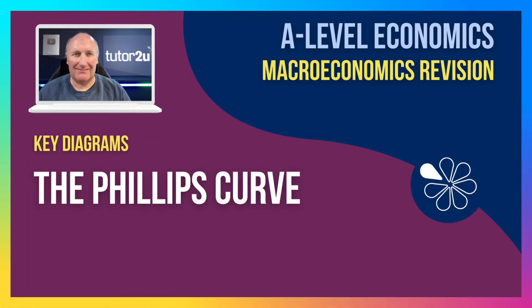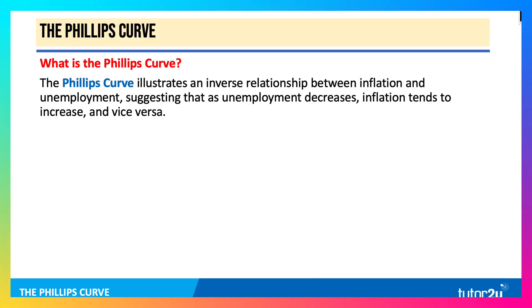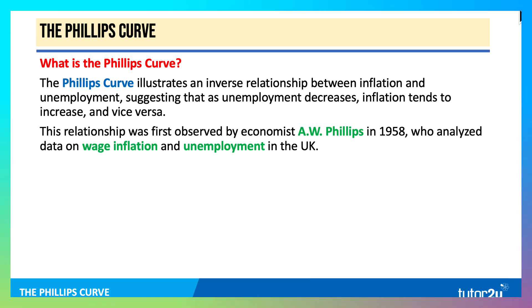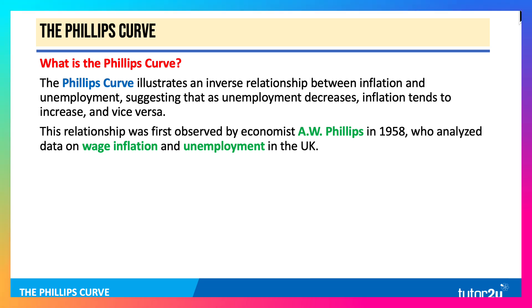Hi there. Let's spend a few minutes revising the essence of the Phillips Curve, a key diagram you can draw in your macroeconomics paper. The Phillips Curve basically tries to show an inverse relationship between inflation and unemployment, suggesting that as the rate of unemployment falls, inflation tends to increase and vice versa. This relationship was first observed statistically by the economist A.W. Phillips in 1958, who analysed decades of data on wage inflation and unemployment in the UK.